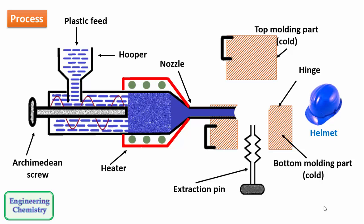This helmet has a very complex shape and it is very difficult to prepare by any other method. So injection molding is the right solution to make this kind of complex materials.